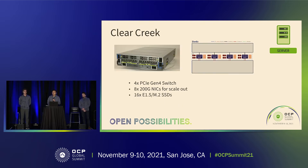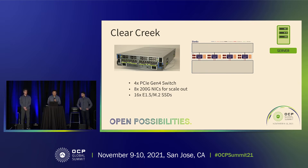Clear Creek is a very important element added to Zion beyond our 2019 proposal. It has four PCIe Gen4 switches and can support eight 200G NICs mainly for scale-out, plus 16 E1.S or M.2 SSDs with interchangeable storage trays. Each OAM connects to the extra SSDs and NICs under the same switch, enabling scale-out capability to aggregate accelerators into a cluster for large workloads.